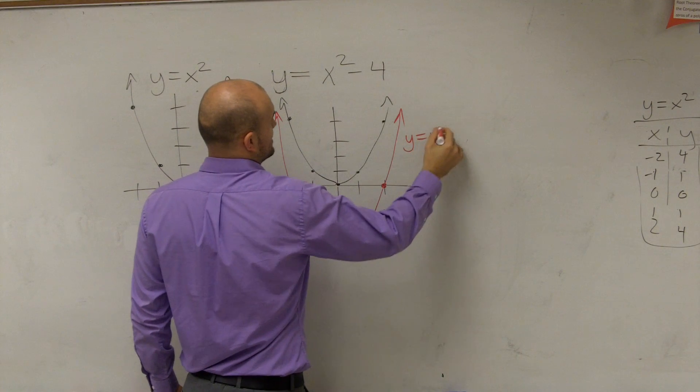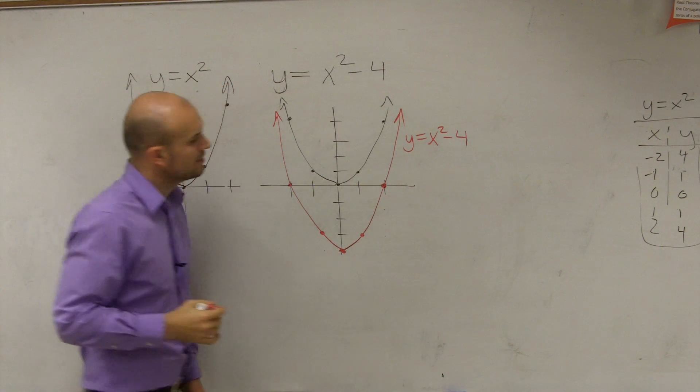So y equals x squared minus 4. Does everybody see what I did?